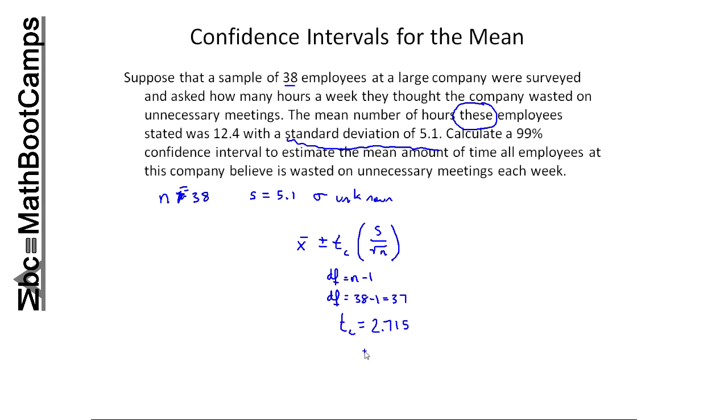So now I'm going to start plugging numbers in. The sample mean was 12.4, so I'm going to add and subtract 2.715 times s, which is 5.1, divided by the square root of 38. So the first thing I'm going to do is calculate the margin of error, so that's that 2.715 times the 5.1. Now I get a margin of error of 2.2.